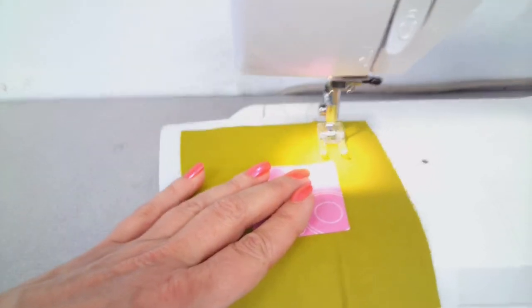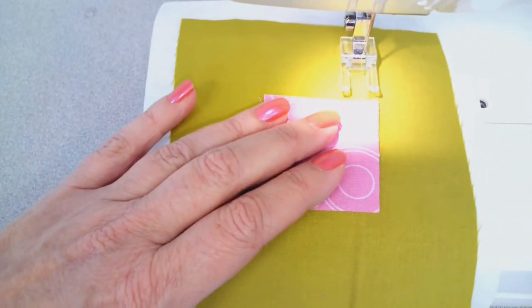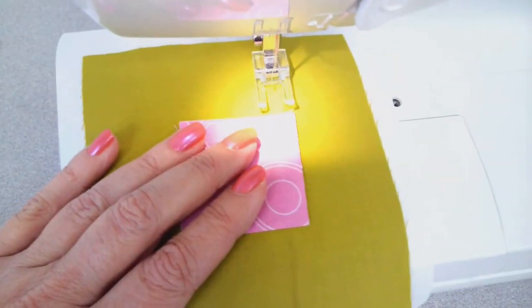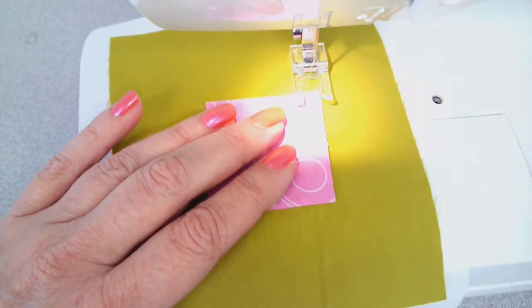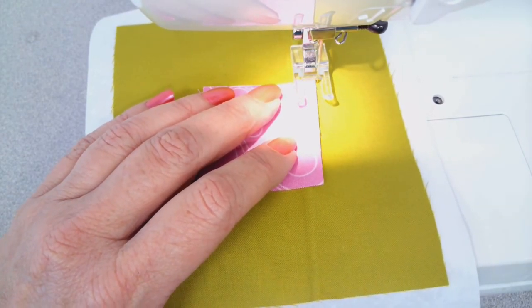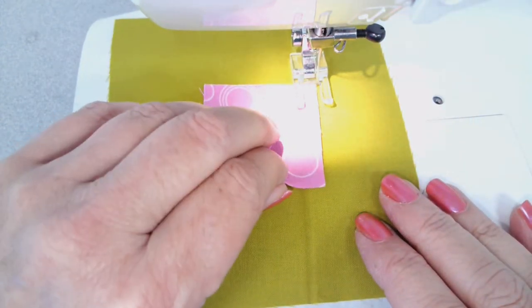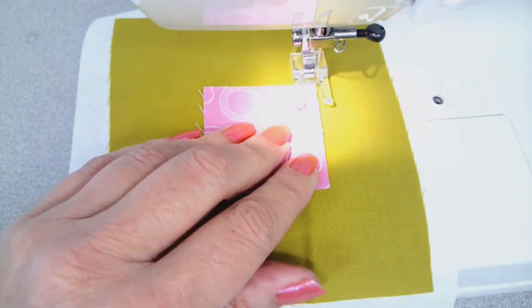Let's see if I can bring this in so you have a better view. Alright, so I'm going to set this up so that my needle is just at the outside edge of my fabric to start. Put my presser foot down and we'll go ahead and sew down this edge.